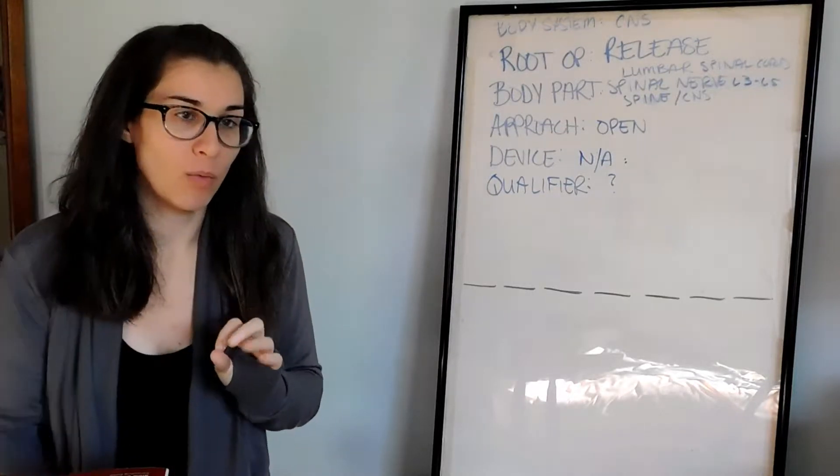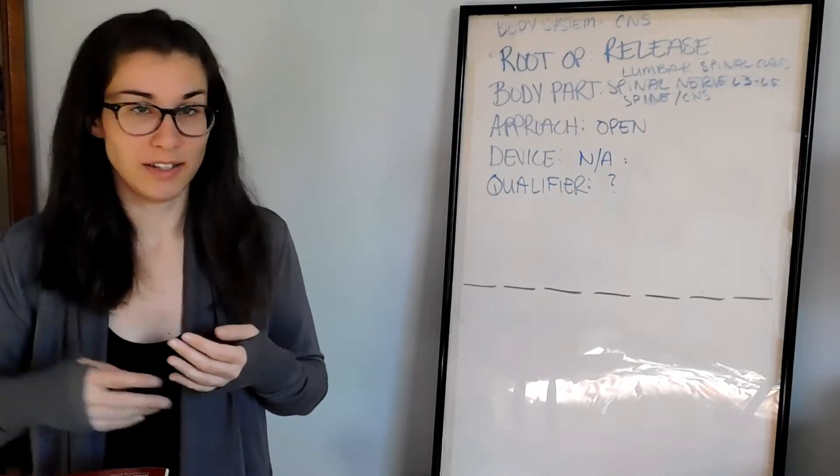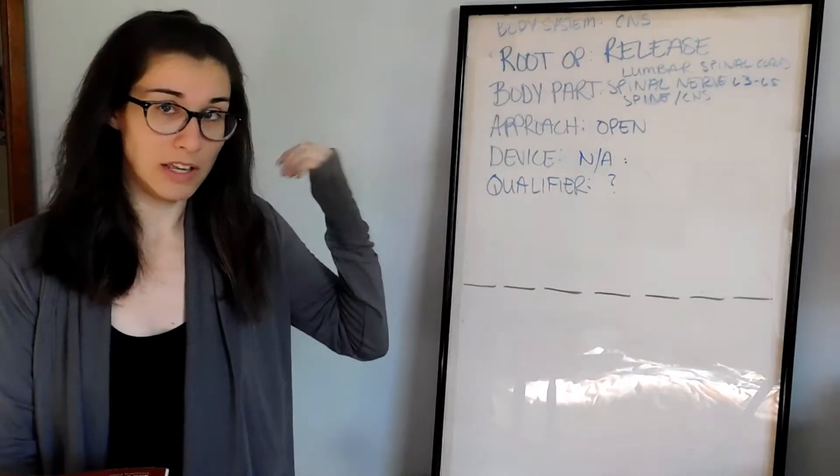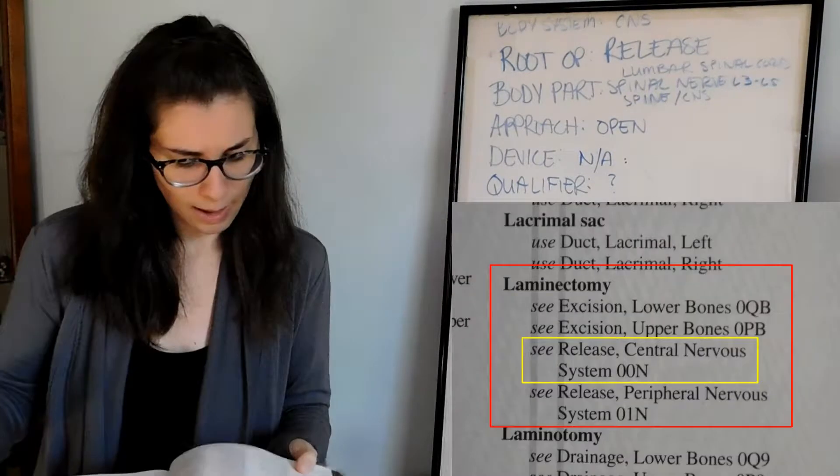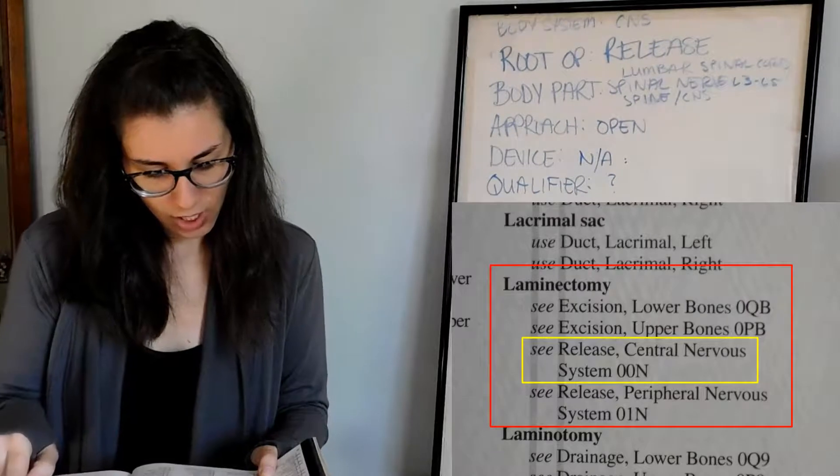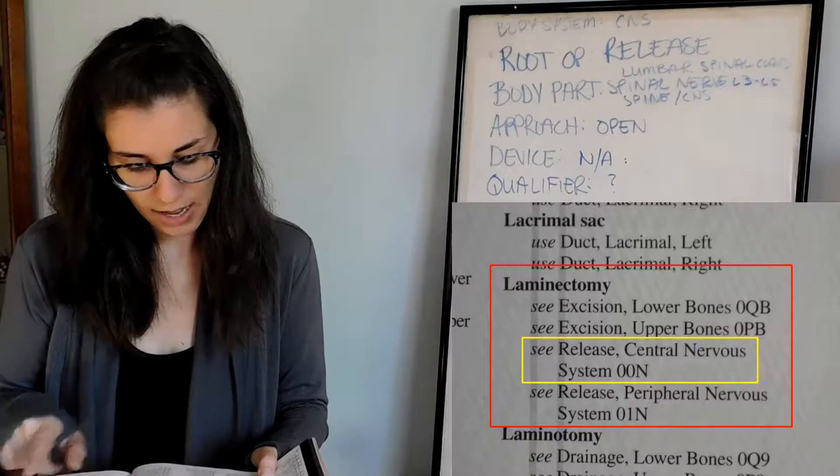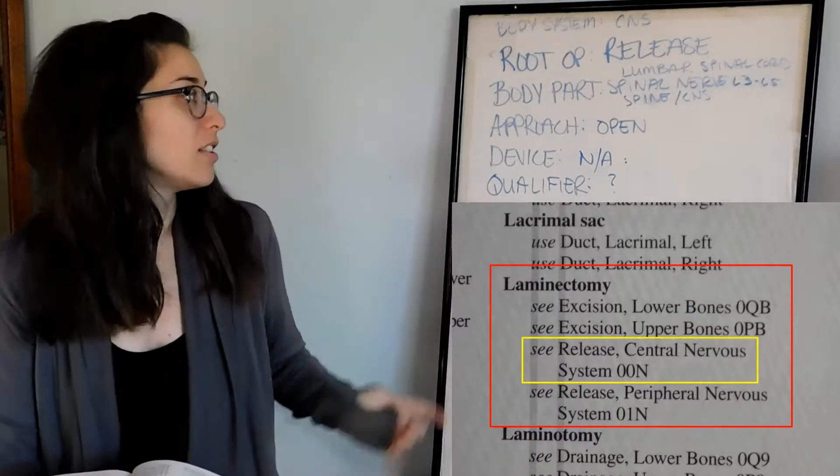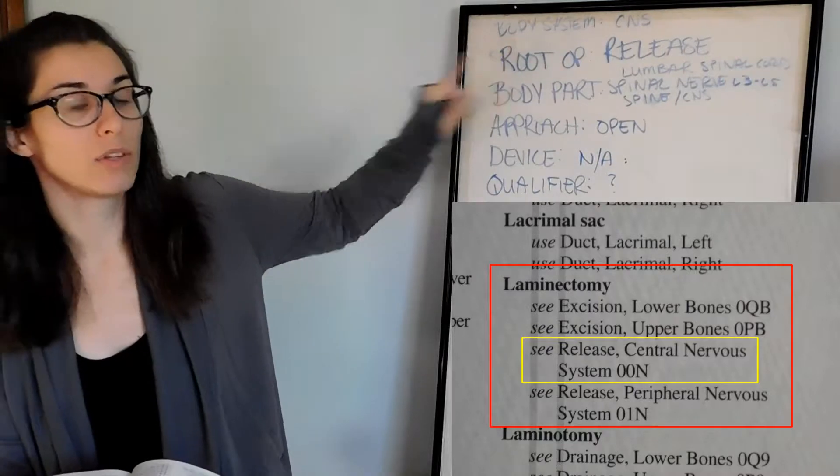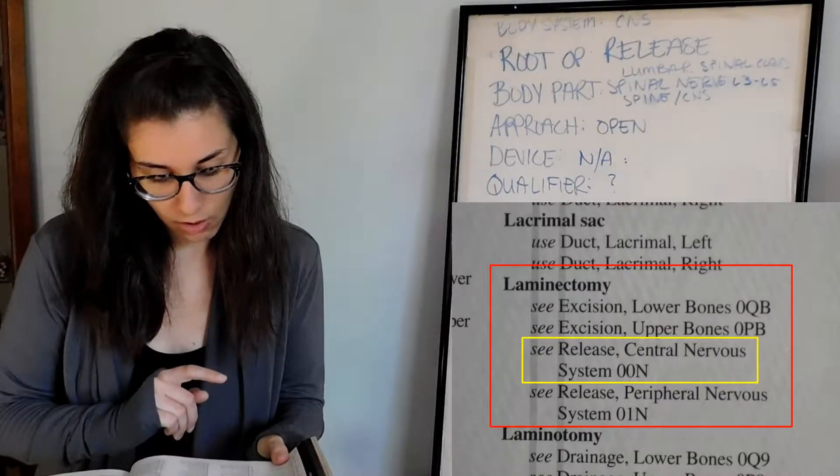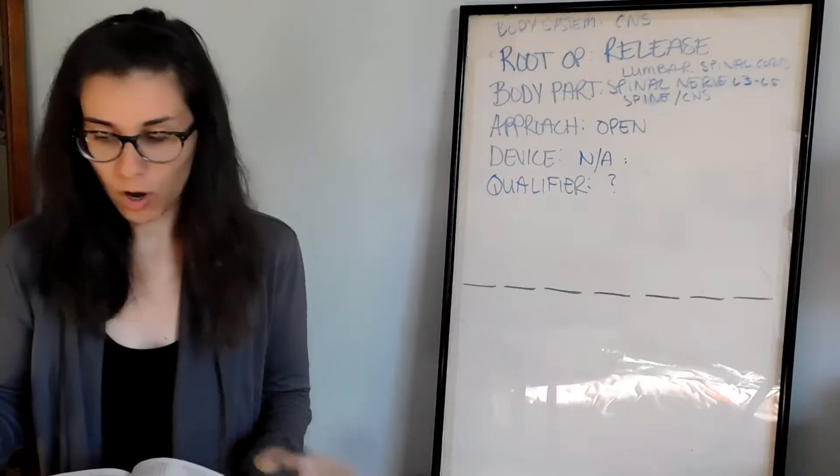So for our root operation of release, in the previous video we went into the index under laminectomy and then went to the body system. You could go to release or laminectomy, either one. We will go with laminectomy, excision of lower bones, excision of upper bones, release of CNS, release of PNS. Since this is happening in the spine and we decided on release, we are going to choose release central nervous system O-O-N.